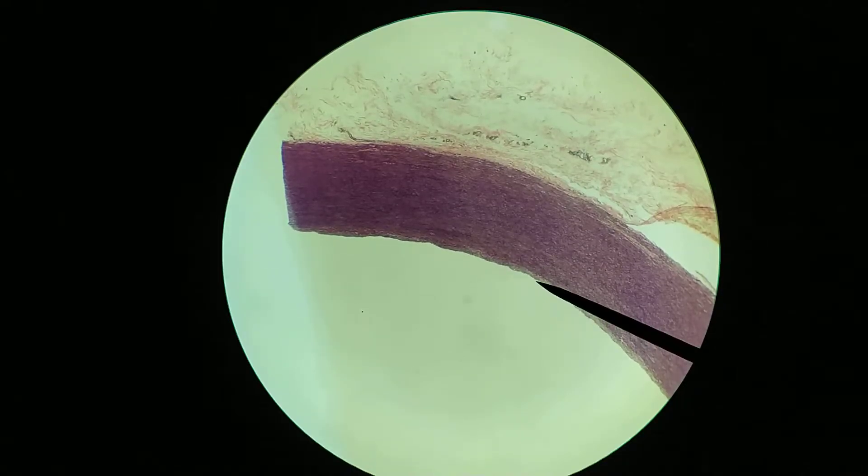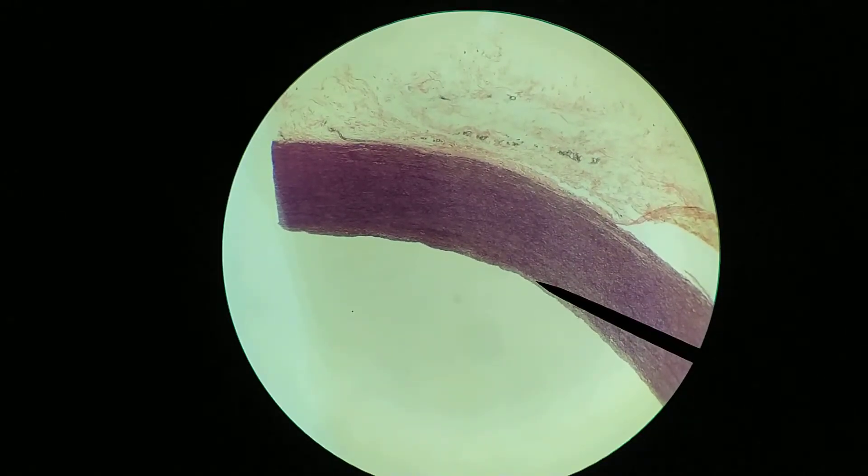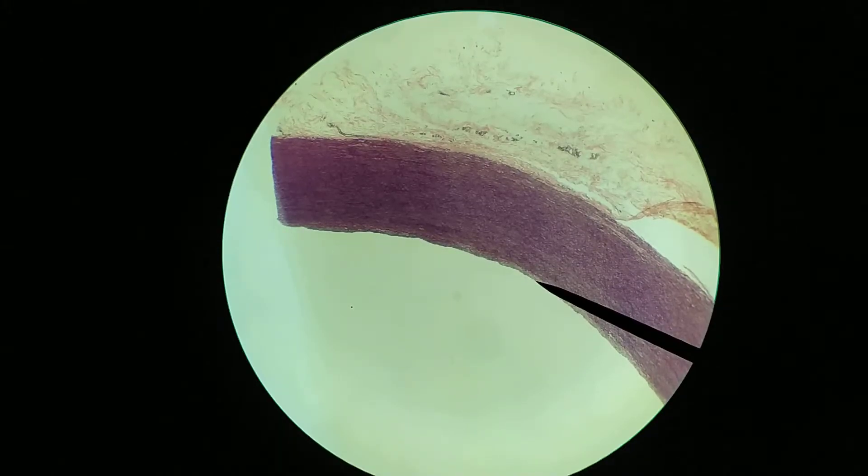So this first layer, the tunica intima, is this region right there. It's kind of a more lightly staining region.